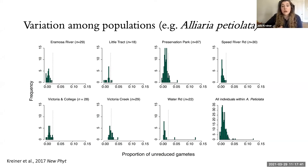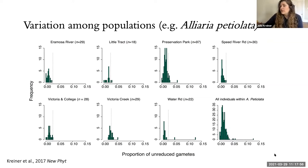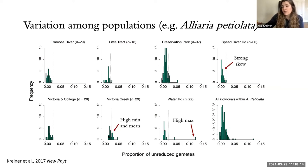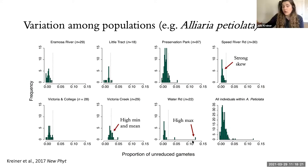To show one example of population-level variation: in Alliaria petiolata — garlic mustard, a widespread invasive weed in Ontario — we typically collected 20 to 30 individuals per population. Looking at these histograms, there's quite a lot of variation in the distributions. Some populations have a pretty high minimum, with individuals producing 1 or 2% at minimum and a high mean; others have individuals producing up to 12%; and some show a strong right skew with most individuals centered around zero. A lot of variation among populations in unreduced gamete production.